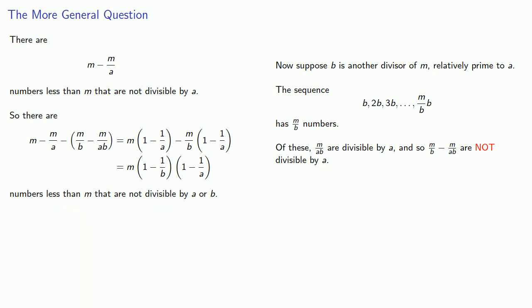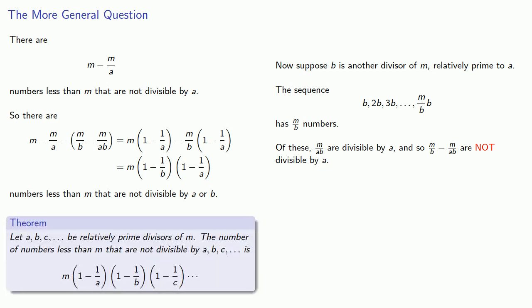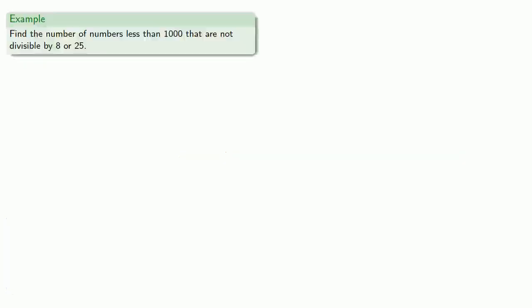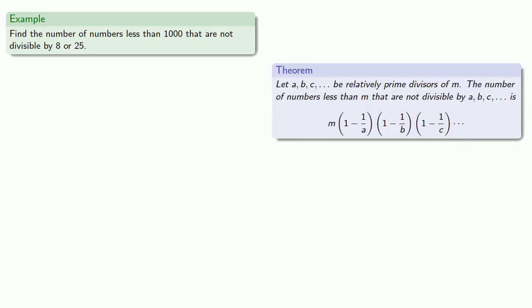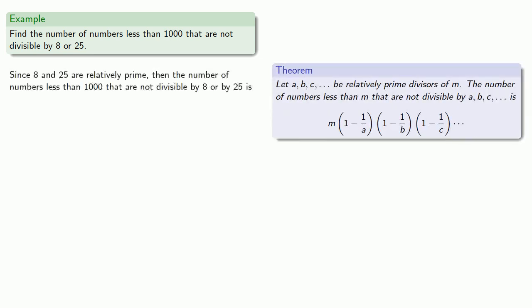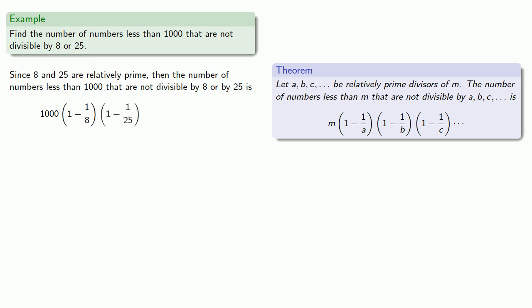And we find an expression for the numbers less than m not divisible by a or b. We then lather, rinse, repeat to get our result. Let a, b, and c be relatively prime divisors of m — the number of numbers less than m that are not divisible by any of them is given by the product formula. For example, suppose we want to find the number of numbers less than 1000 that are not divisible by 8 or by 25. We check that 8 and 25 are relatively prime, so the answer is 1000 times (1 − 1/8) times (1 − 1/25).